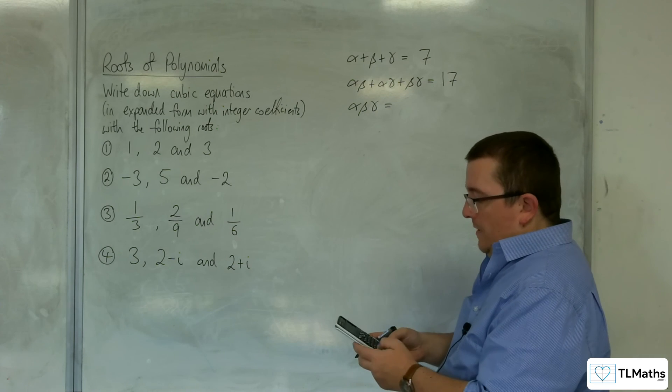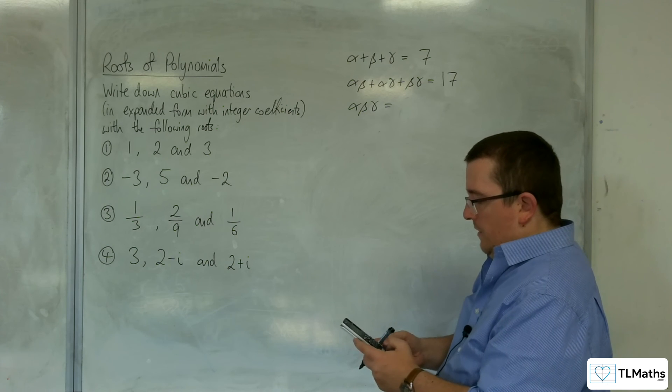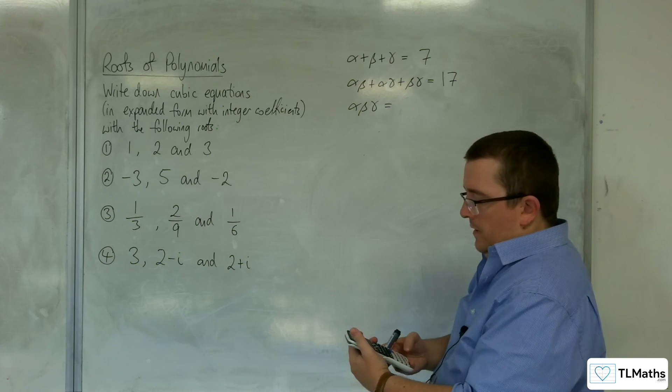Then, alpha beta gamma, so 3 times 2 take away i times by 2 plus i, and that gets me 15.